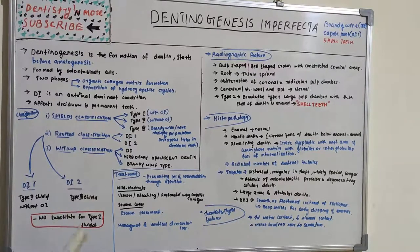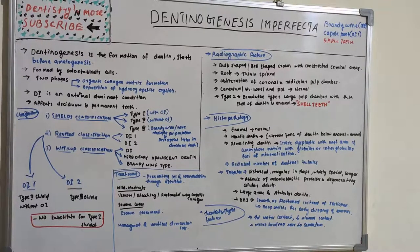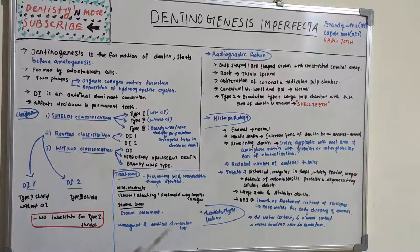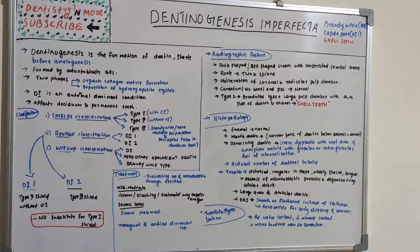There are large areas of atubular dentin. The dentinoenamel junction (DEJ) is smooth and flattened instead of scalloped, which is responsible for the early chipping of enamel — because if it were scalloped there would be interlocking between enamel and dentin, but since it is smooth, enamel chips off easily. In chemical and physical features, there is increased water content — around 60% more than normal — and decreased mineral content and microhardness, which is near to that of cementum.